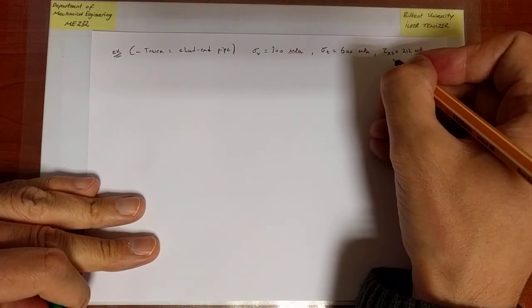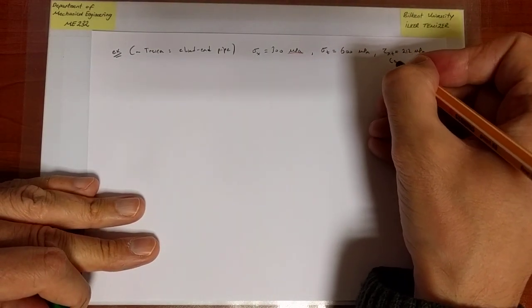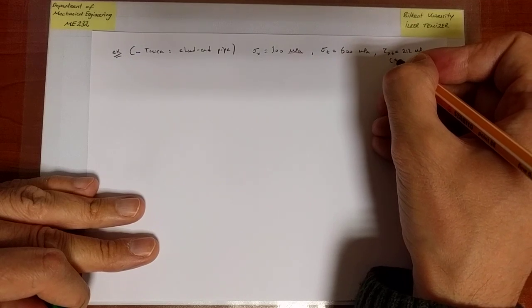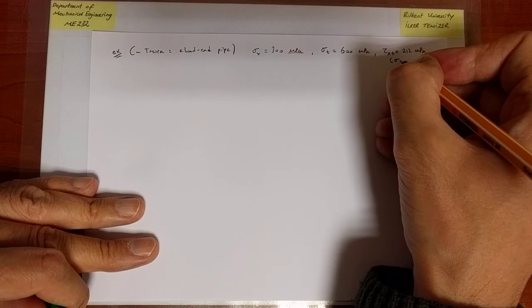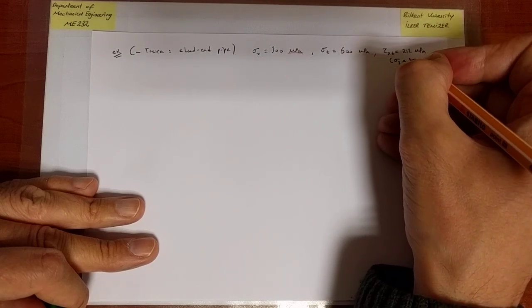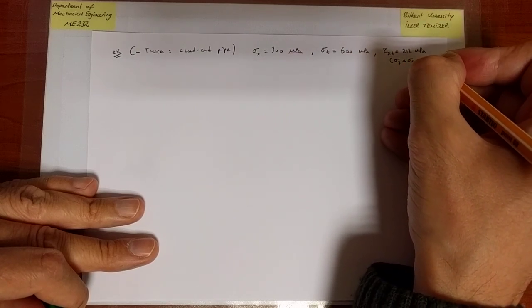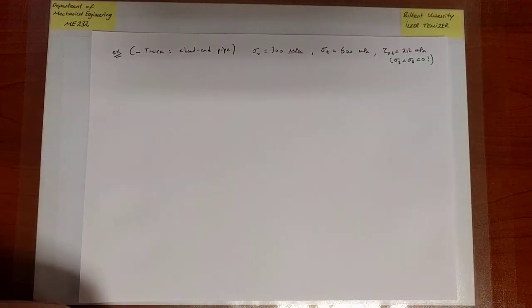In reality the most critical point is the inner side where sigma_3 equals sigma_r equals minus the pressure, but it was only 20 MPa. It's thin-walled, it's really negligible. So we're going to say sigma_3 equals sigma_z equals zero because it makes a negligible difference.